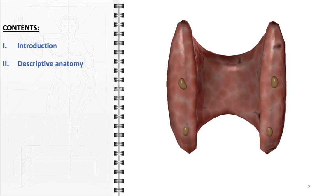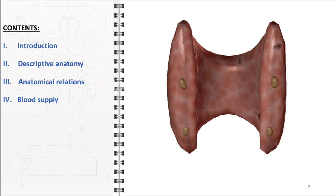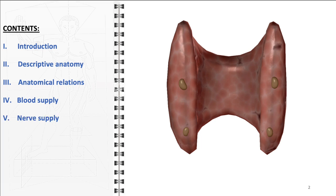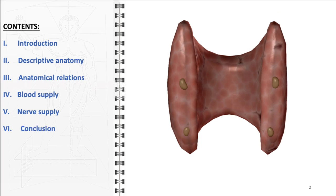After the introduction, we will delve into the descriptive anatomy of these glands, detailing their shape, dimensions, and external configuration. Following this, we will discuss the anatomical relationships of the parathyroid glands, highlighting how they are intricately connected to other structures in the neck. Next, we will delve into the vital aspect of the gland's blood and nerve supply. Finally, we will wrap up with key takeaways, summarizing the importance of these glands in both health and disease, and their significance in surgical contexts.